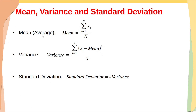Mean is also called average. Mean = (Σ from i=1 to n of x_i) / n. Basically, we find the sum of all numbers in a list and divide by n, which is the number of elements. Variance = (Σ from i=1 to n of (x_i - mean)²) / n, where x_i is every element in the list. Standard deviation is simply the square root of variance.